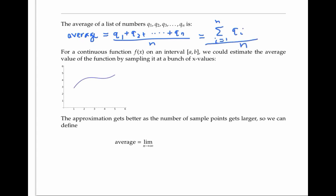But defining the average value of a continuous function is a little different, because a function can take on infinitely many values on an interval from a to b. We could estimate the average value of the function by sampling it at finitely many evenly spaced x values, which I'll call x_1 through x_n, spaced a distance of delta x apart.